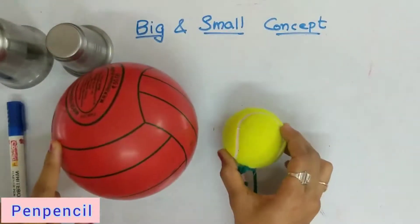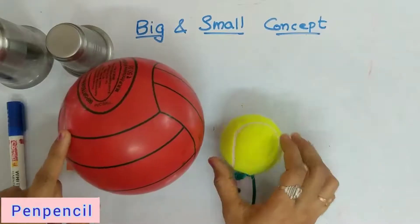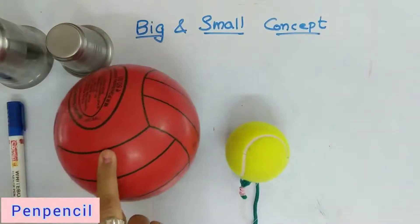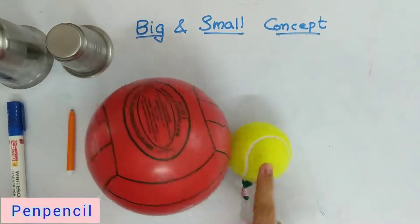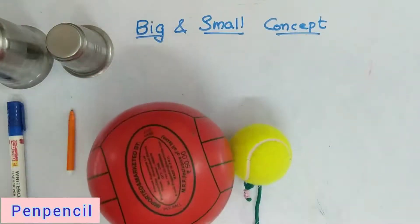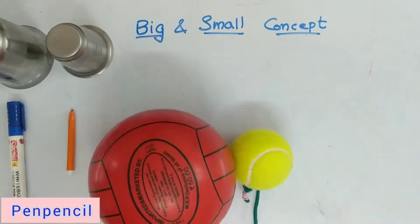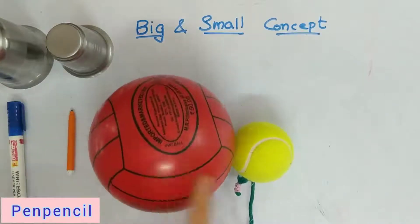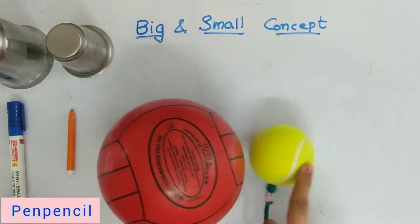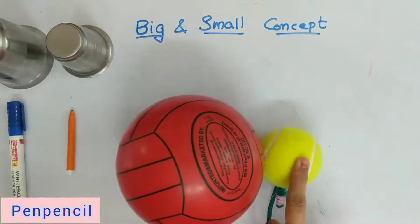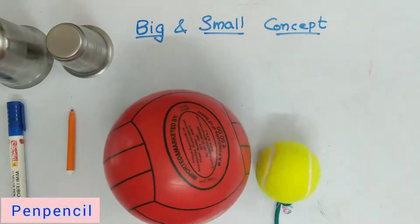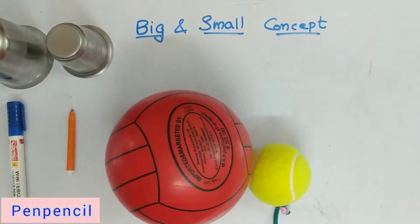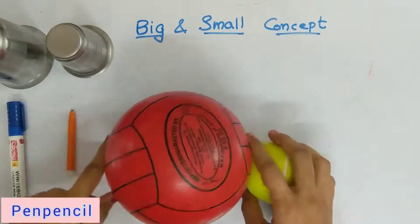This is a small ball — this is a smaller ball. Now we'll see one more object.